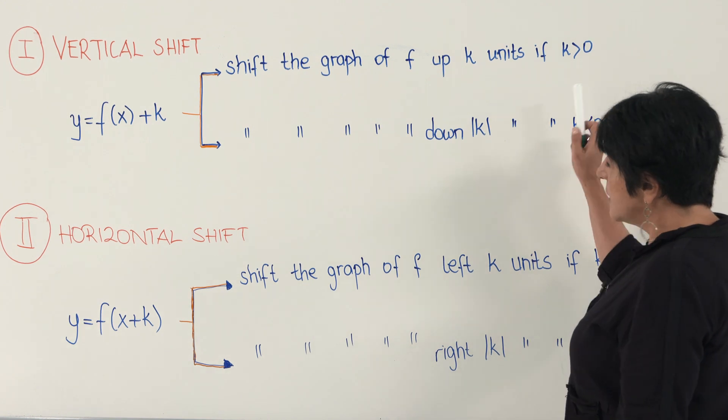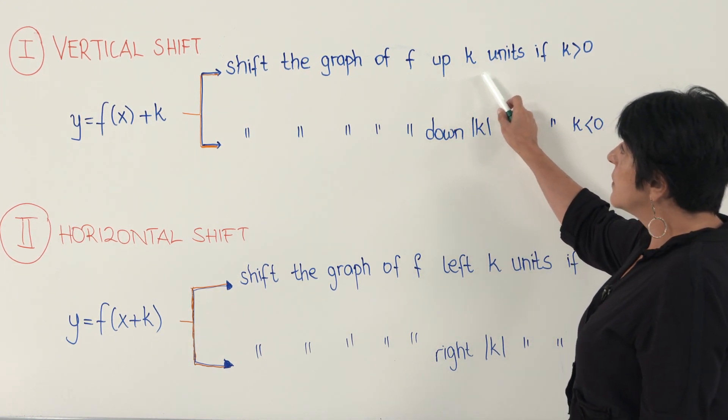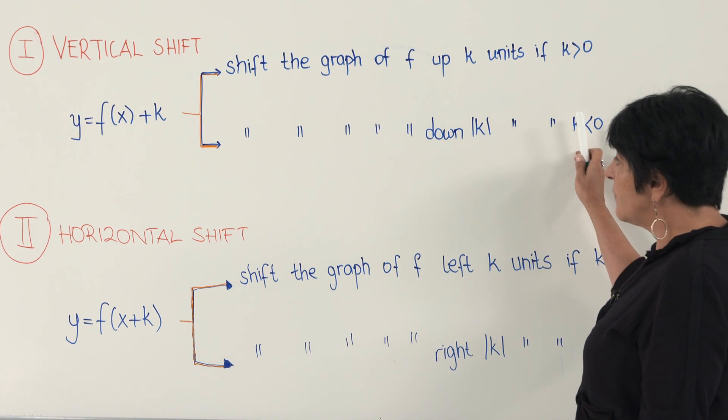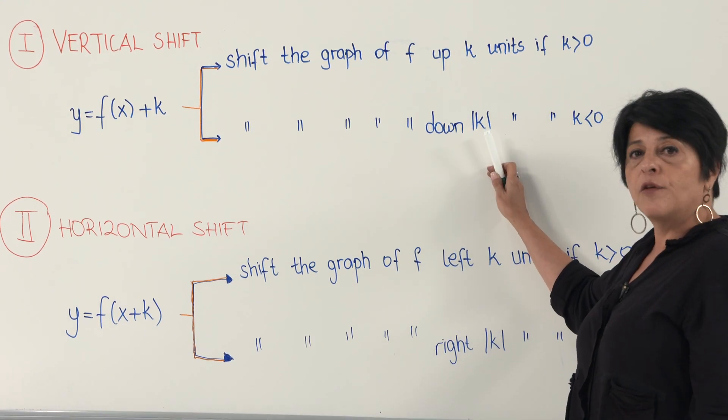If k is positive, you shift the graph of f up k units. If it is negative, down by absolute value of k units.